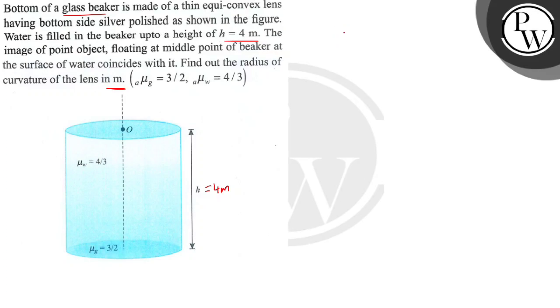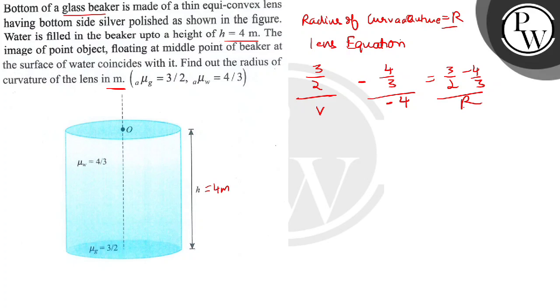The radius of curvature is equal to R. If we talk about considering refraction of the object from the first surface, I will be getting here 3 by 2 upon V minus 4 by 3 upon minus 4 is equal to 3 by 2 minus 4 by 3 upon R, which is our focal length.